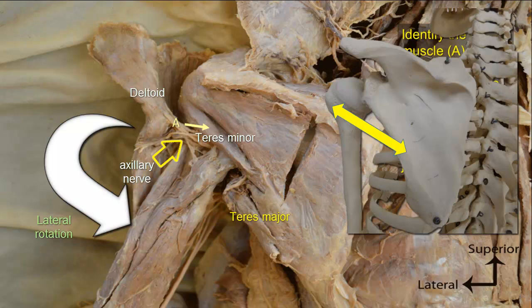Note here, in this dissection, that teres major — the bigger muscle that arises inferior to teres minor — disappears distally because it passes to the front of the humerus. But the whole extent of teres minor can be seen because the muscle remains in the back and is attached to the back of the greater tubercle of the humerus.